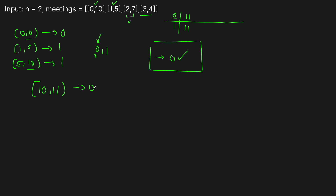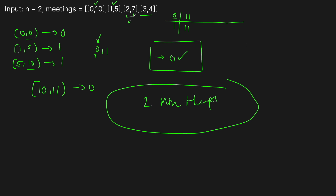On paper it's relatively simple, but in practice it's more complicated with those extra rules. We're still going to use a heap approach, because we need to track which meeting is ending soonest and also the smallest available room. We're actually going to use two min heaps here.